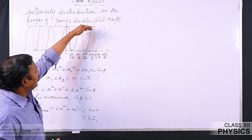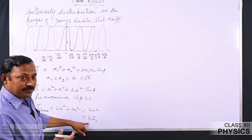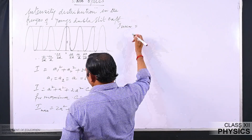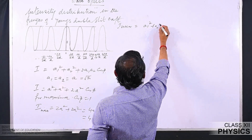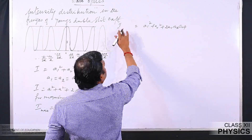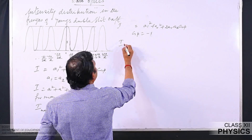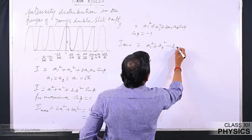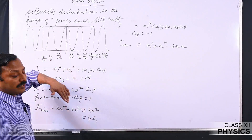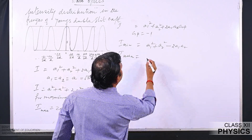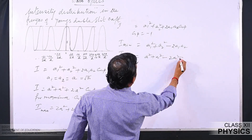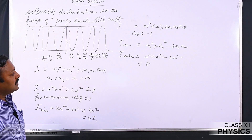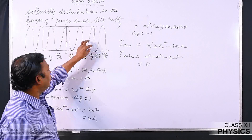For minimum intensity, cos(phi) = −1, giving I_min = a² + a² − 2a² = 0. So maximum intensity is 4 times the intensity of either source, and minimum intensity is zero. That is why we can clearly distinguish bright and dark fringes — there is a clear contrast between them.